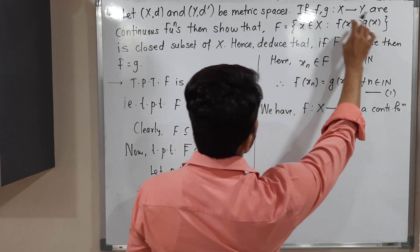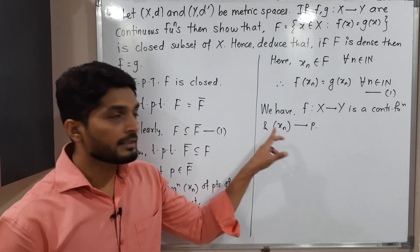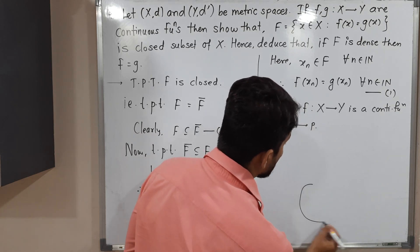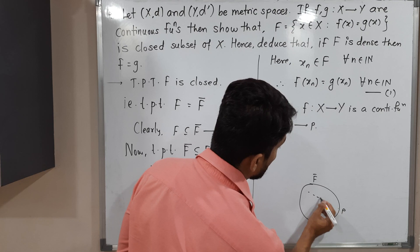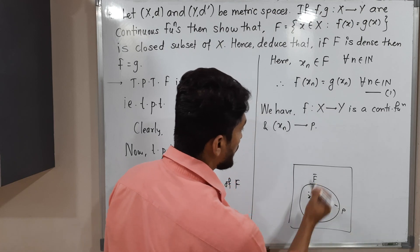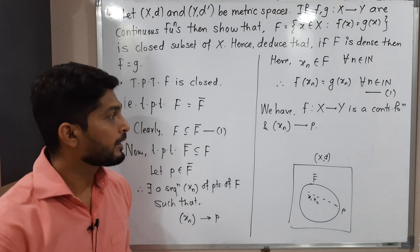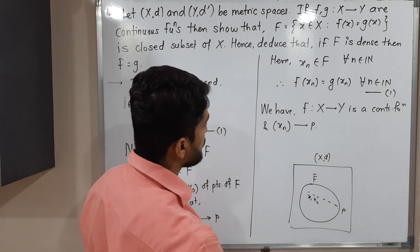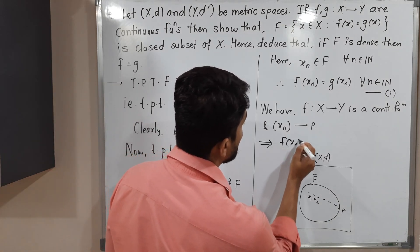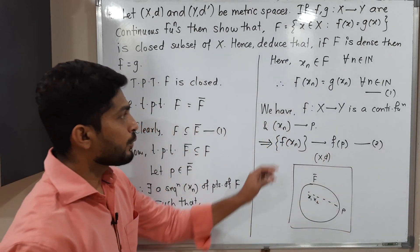Now, f from X to Y is a continuous function, and xₙ converges to p. Note that xₙ is a sequence of points of F, which lies in X, so x₁, x₂, ... is a sequence of points in the metric space X,d converging to p. Since f is continuous and xₙ → p, by the sequential criterion of continuity we can write f(xₙ) → f(p).